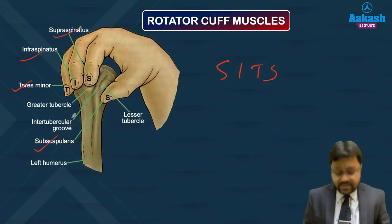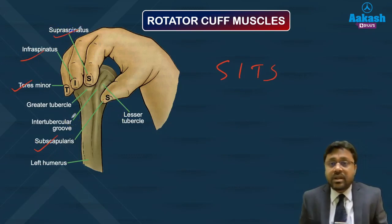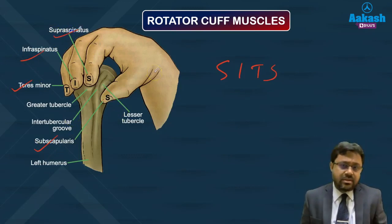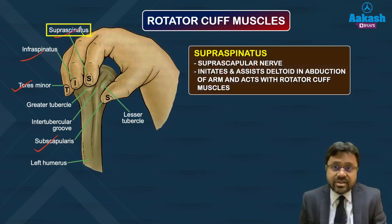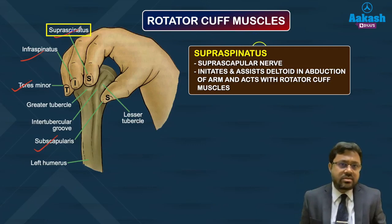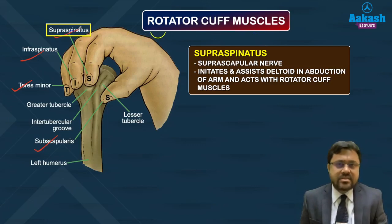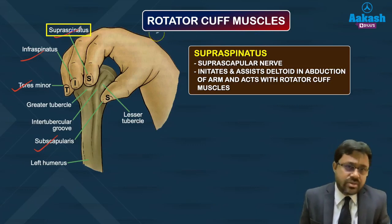The supraspinatus muscle is supplied by the suprascapular nerve. Its main action is initiation of abduction of the arm at the shoulder joint, and it assists the deltoid in that function. So supraspinatus initiates and assists abduction of the shoulder joint.